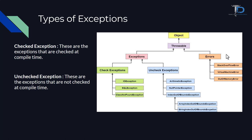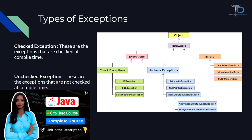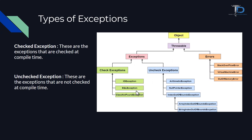Types of exceptions: there are two types — checked exceptions and unchecked exceptions. Checked exceptions are those which are checked at compile time. Unchecked exceptions are those which are not checked at compile time. From the block diagram, there are three common unchecked exceptions: ArithmeticException, NullPointerException, and IndexOutOfBoundsException. These are unchecked exceptions that you get at compile and run time.